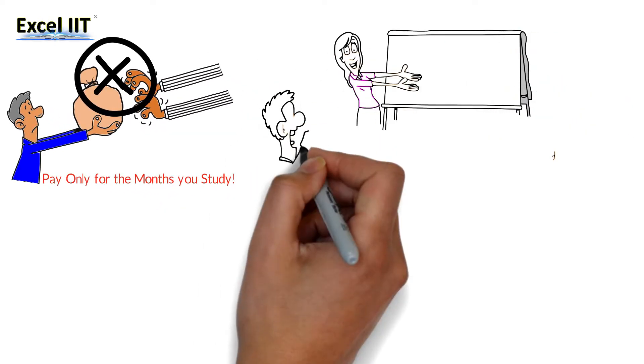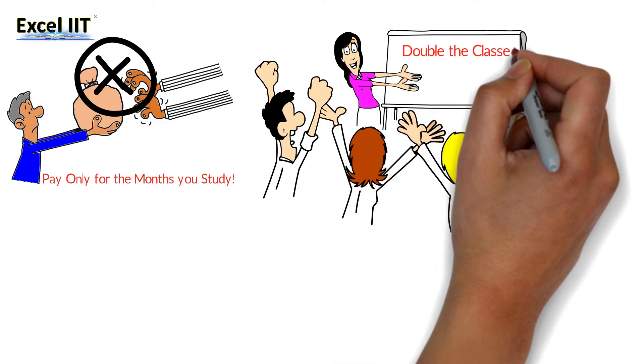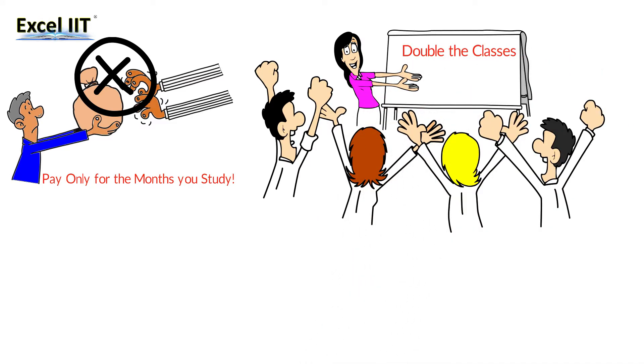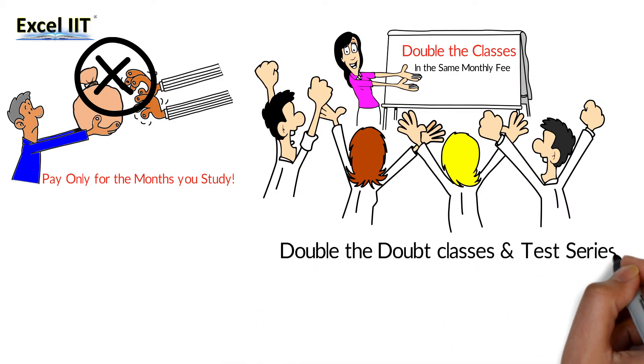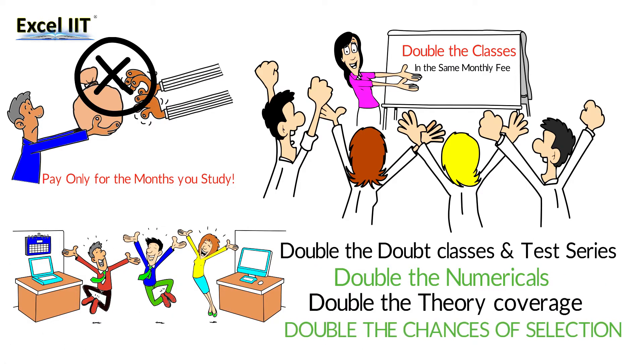And that's not all. Excel IIT also offers double the classes compared to other institutes in the same monthly fee. That simply means double the doubt classes and test series, double the numericals, double the theory coverage. Means double the chances of selection.